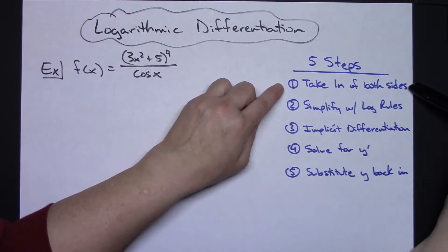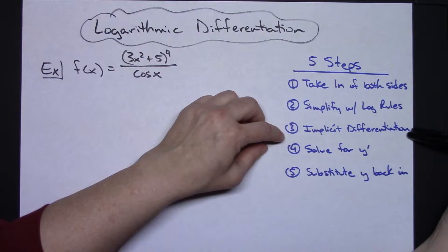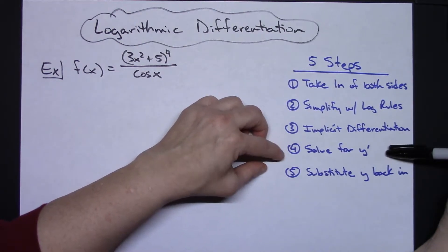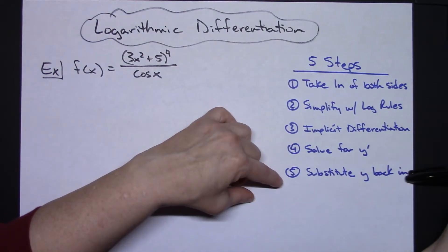The first step would be to take the natural log of both sides. Second step would be to simplify using your log rules. Third one is you're going to take the derivative by using implicit differentiation. Fourth one you would want to solve for y prime. And then the last step you would want to substitute y back into your equation.